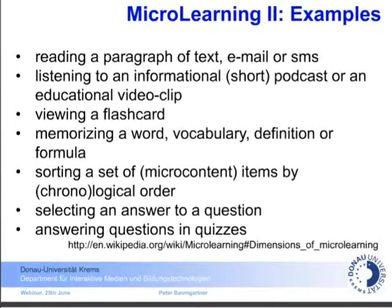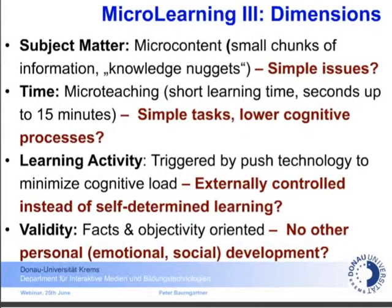Here are some examples of microlearning: reading a short paragraph of text, using flashcards with a computer or mobile device, memorizing words or vocabulary, or selecting an answer to a question and answering questions in quizzes. The important thing is that we have small chunks of information, so-called knowledge nuggets. There is one very important theoretical question: does this mean that microlearning is just for simple issues, as most people believe? I will give you another perspective — I think we can also use it for quite complex issues.